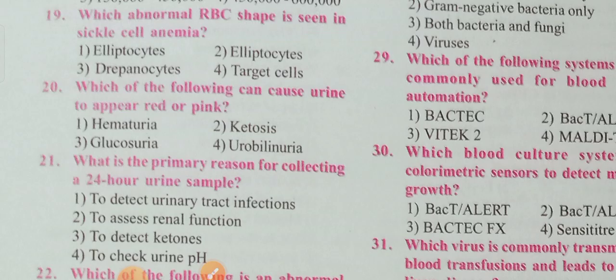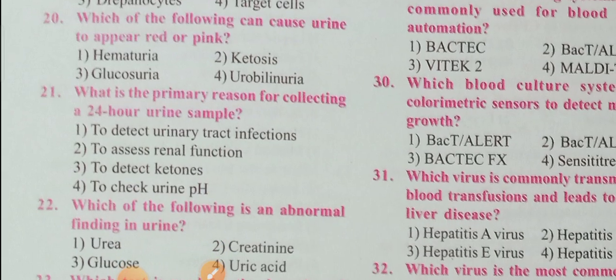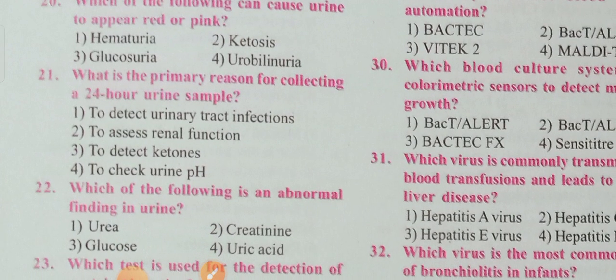Question 20: Option 1 is hematuria. Hematuria is bleeding in the urine, which causes the urine to appear red or pink. Question 21: What is the primary reason for collecting a 24-hour urine sample?